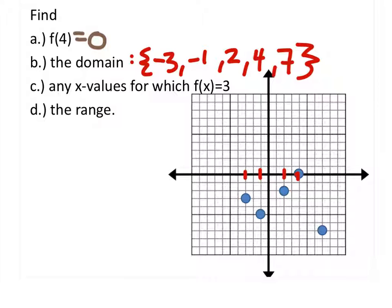Alright, are there any values for which f of x equals 3? This is where the y value is 3. There are no points on this line. Maybe you have a better line, but no points on that line.